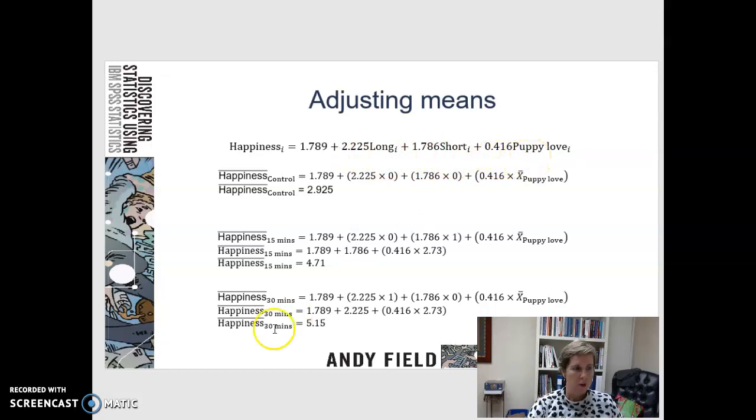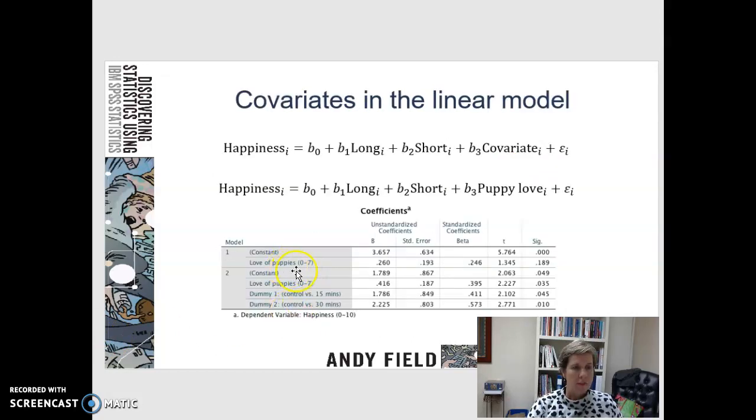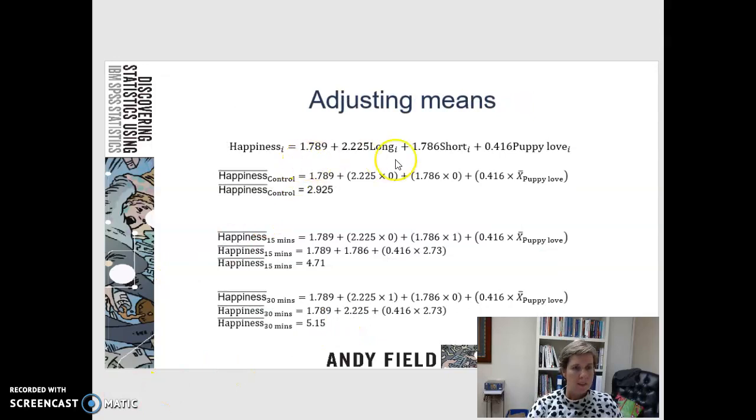Where are these numbers coming from? I'm going to flip back here really quickly, and I'm going to be using this model: 1.789, 0.416, 1.786, and 2.225. This is our prediction equation to predict happiness. That's these numbers right up here.